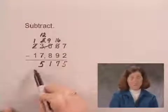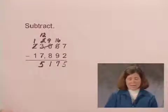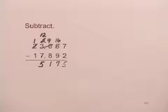And 1 minus 1 is 0. Since that's at the left of the number, we don't have to write that. So the difference is 5,175.